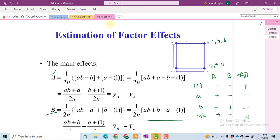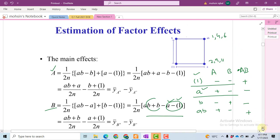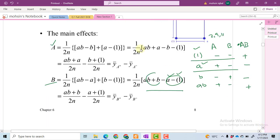You can see the AB term and B term are with the plus sign, whereas A and (1) have negative signs. In this column, B in front of A has a negative sign. So these two terms become negative. Again, we divide by 2n because there are two positive terms, two negative terms, and n is for replication. This gives us expressions for calculating main effects.